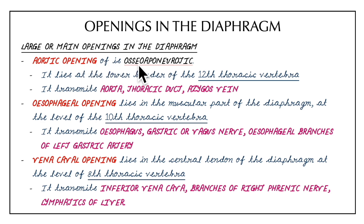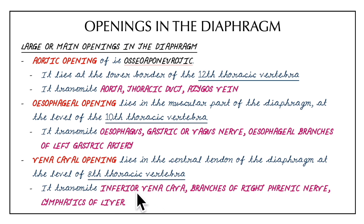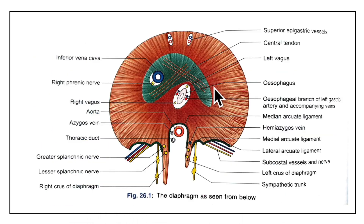In summary of the large openings: the aortic opening is osteoaponeurotic, lying at the lower border of the 12th thoracic vertebra, and transmits the aorta, thoracic duct, and azygos vein. The esophageal opening lies in the muscular part at T10 and transmits the esophagus, gastric or vagus nerve, and esophageal branches of the left gastric artery. The vena caval opening lies in the central tendon at T8 and transmits the inferior vena cava, branches of the right phrenic nerve, and lymphatics of the liver.